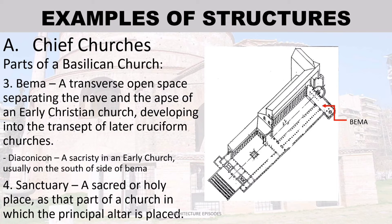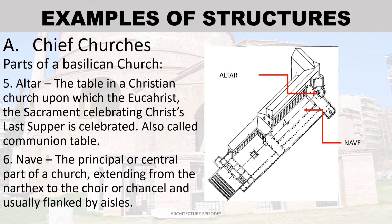Diaconicon — a sacristy in an early church, usually on the south side of the bema. Sanctuary — a sacred or holy place, such as the part of a church in which the principal altar is placed. Altar — the table in a Christian church upon which the Eucharist, the sacrament celebrating Christ's Last Supper, is celebrated; also called communion table. Nave — the principal or central part of a church extending from the narthex to the choir or chancel, usually flanked by aisles.